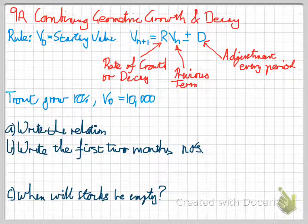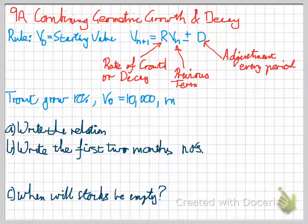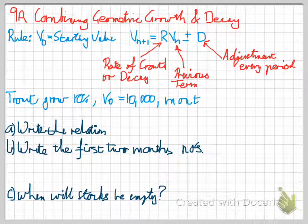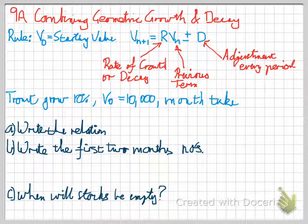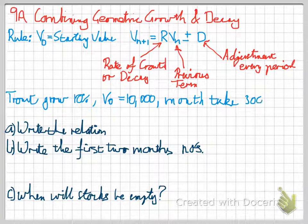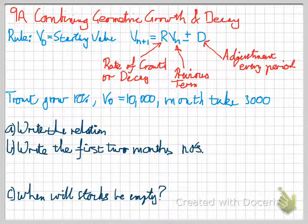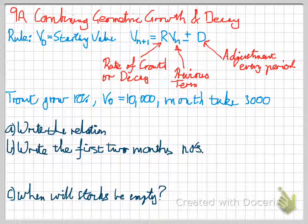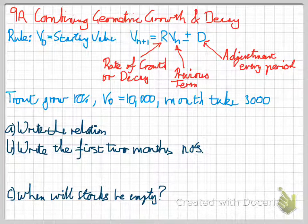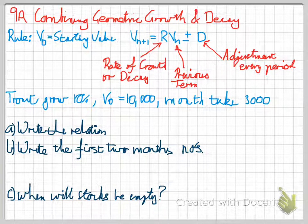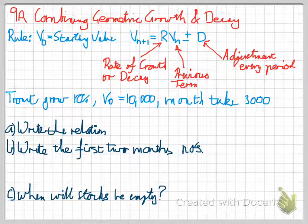And every month we take 3,000 out of that population. Then, what does the relation look like? So what does the recurrence relation look like? What do the months after that look like and how do we find that? And also, when will the stocks be empty? So we want to be able to answer all those questions with that information.